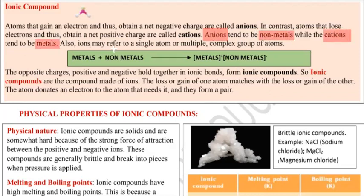Ions may refer to a single atom or a complex group of multiple atoms. Ions can be either one single atom or a group of atoms that carry a charge. Whatever charge is made on them, they become ions.